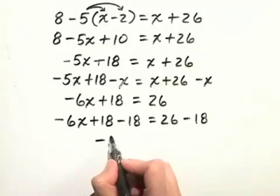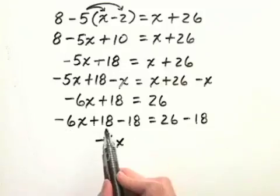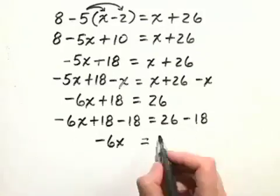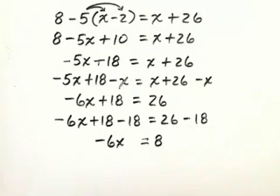On the left hand side, we're just left with negative 6x, because the 18 and minus 18 add to 0. Equals, on the right hand side, 26 minus 18 is 8.